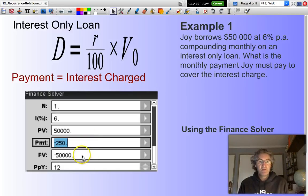What you notice here, the future value is negative $50,000. So what that means, at the end of the loan, Joy has to pay back that $50,000.